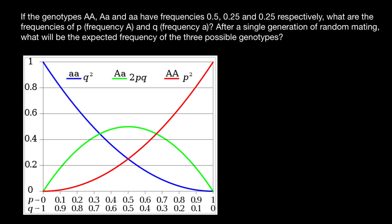What does it mean that some population is not in equilibrium? That means that this population, just like maybe 99% of populations, is under pressure of selection — some genotypes are preferential over others and have better fitness. Or we can find in such a population assortative mating or migration. Another variant can be that this is just a very small population, and these numbers are due to random chance.